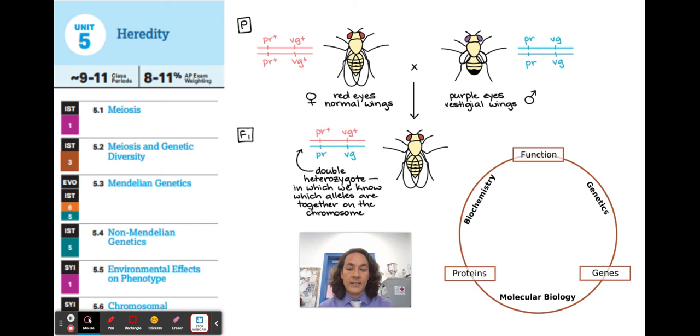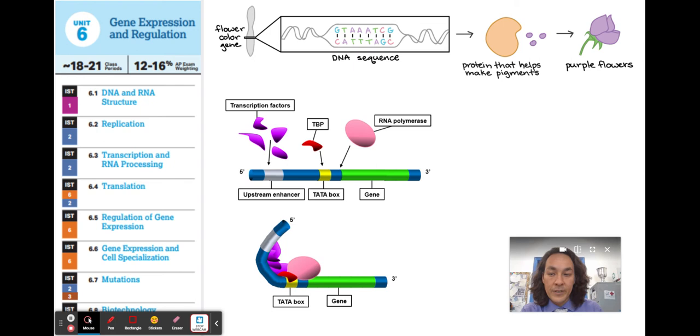Unit six deals with gene expression and regulation. So this is DNA to RNA to protein, super important. And we can look at lots of examples with the coronavirus and what's going on there. And so here, up top, you can see a picture of a flower color gene. And so this is going to code for the flower to be purple. The DNA sequences the gene. It will code for RNA, which will go to a ribosome and make a protein. And that protein will make the flower purple. In AP biology, we'll get into how this is regulated with transcription factors and the Tata box and all types of cool things right here and how that leads to cellular specialization.